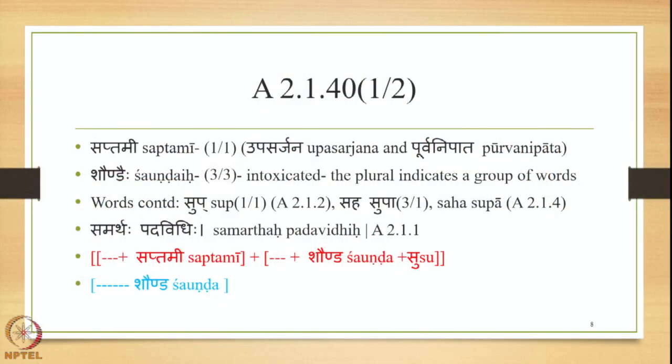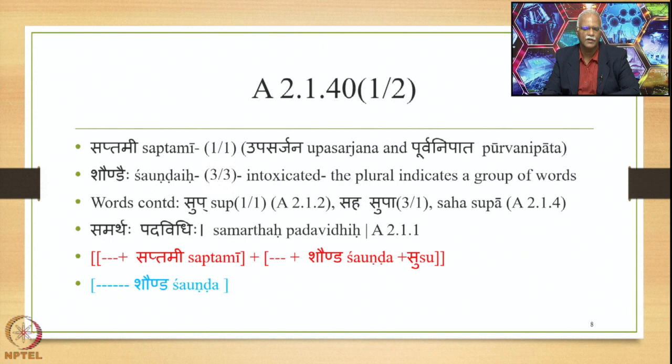Shasthi Vibhakti can also denote Karaka relations but only in a very limited environment — that of the Krit suffix. There are sutras which deal with this aspect, which we shall study when we study the Shasthi Tatpurusha Samasa. On this background, let us concentrate on the Saptami Tatpurusha Samasa and the first sutra, Saptami Shavundaihi (2.1.40). The word Saptami occurs in the Prathama Vibhakti, so Prathama Nirdishtam Samasa Upasarjanam assigns the term Upasarjana, and Upasarjanam Purvam ensures the Purvanipata of the word ending in Saptami.